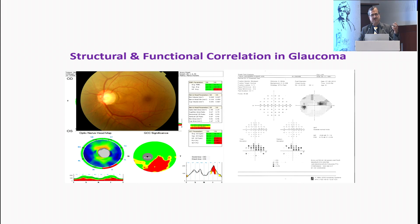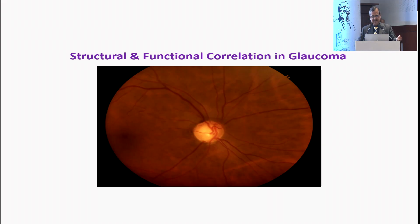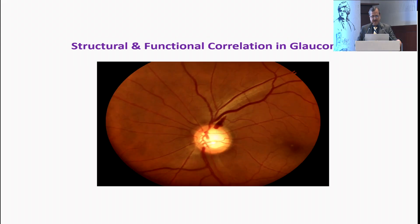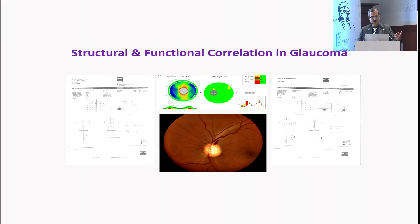If you see this disc, there is definitely an inferior excavation with dipping of the vessel. Correlating with the OCT, you also see a superior temporal defect as well as an inferior defect. That perfectly correlates with a superior arcuate defect and a focal defect in the inferior nasal step. Always look out for hemorrhage — this hemorrhage was present and the visual field was normal. You need to treat this patient, bring down pressures to the optimum level, because despite maintaining the pressure, you may slowly detect a focal glaucomatous defect in the inferior nasal step.